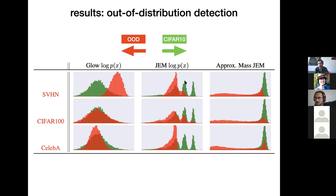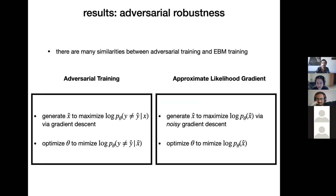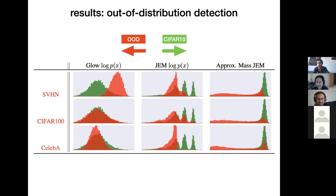Regarding whether these properties apply to protein and molecular data: the multimodal likelihood behavior would likely hold across a wide variety of domains, but to date these types of results in the literature have only been published for images, since that's mostly what people publish on. Regarding training tricks: the most crucial one at large scale is decoupling the step size from the noise in Langevin sampling, giving a two-parameter sampler with a step size and separate noise level.